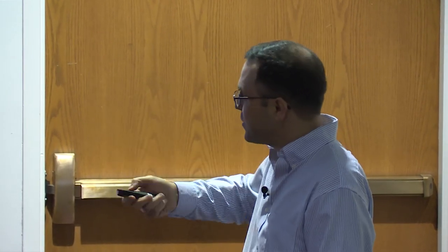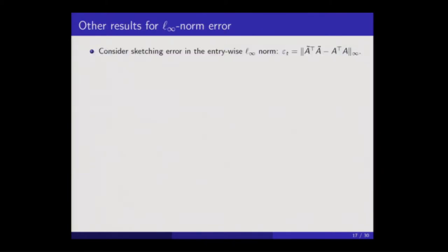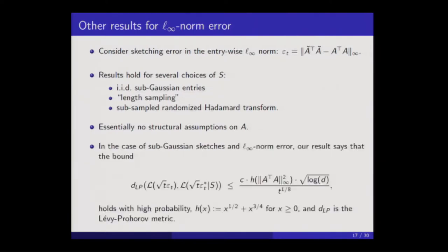There are some interesting intermediate results regarding covariance estimates, but I won't get into those here. In the earlier paper, we were looking at the entry-wise L-infinity norm for the error variable. The results there are a bit more general — this is a weaker norm than the spectral norm, which allows some of the conditions in the newer result to be relaxed. In the previous paper, we considered a wider range of sketching matrices, and there are essentially no conditions required on the matrix A. The nature of the bound is different — a different statistical distance — and that bound is not dimension-free.